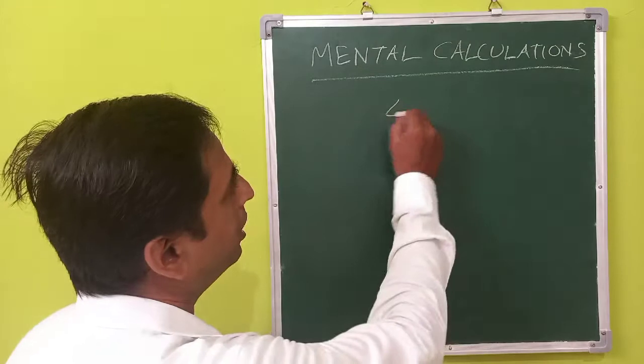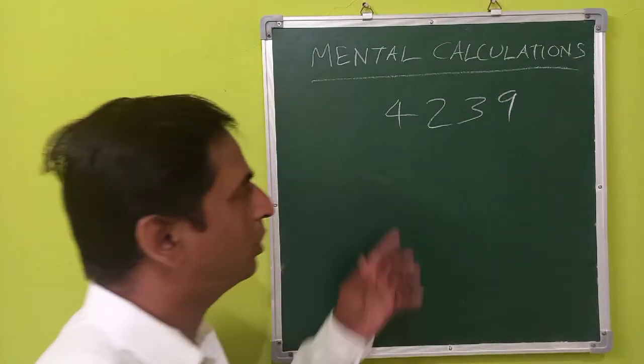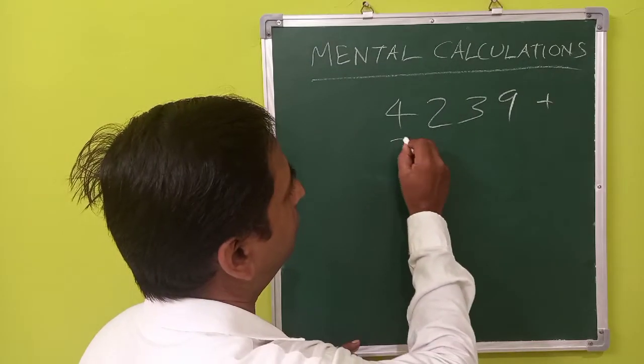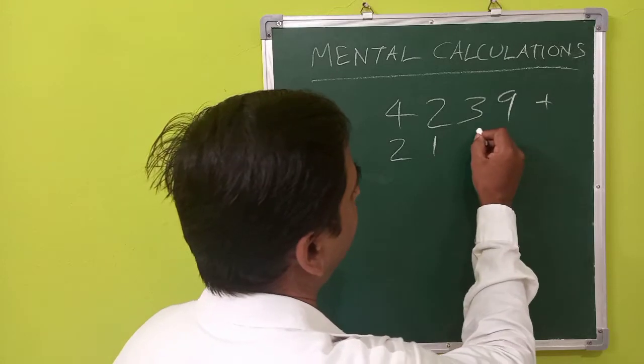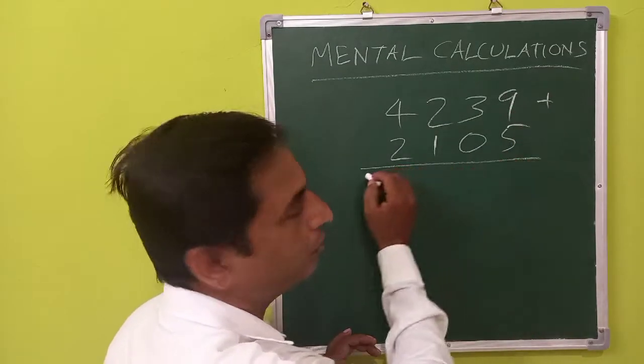Traditionally, if you need to add some numbers, let's say 4239 and add it to 2105, traditionally we will be adding from the right and move towards left.